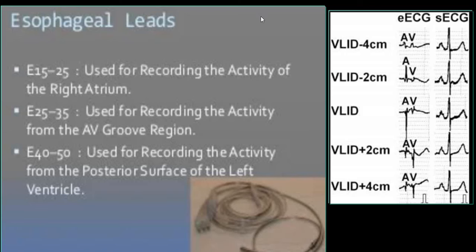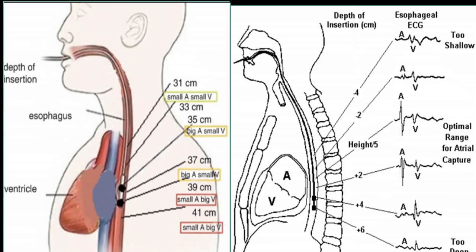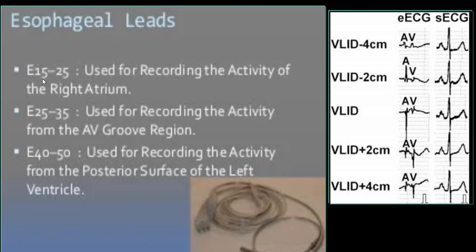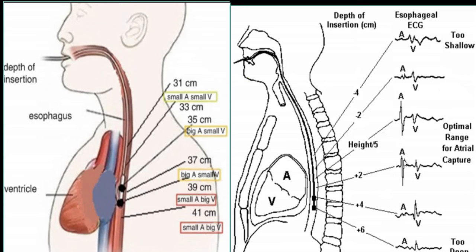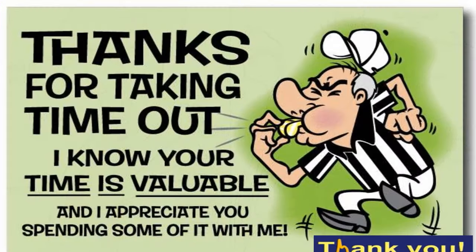The esophageal lead is mainly taken to look for atrial activity — specifically the P wave. The esophageal lead is placed at distances of 15 to 25, 25 to 35, or 40 to 50 cm, and then an ECG is taken. In the esophageal lead, the P wave becomes more prominent and better seen, helping identify P wave and atrial activity. This is particularly good for the left atrium, since the left atrium is posterior.